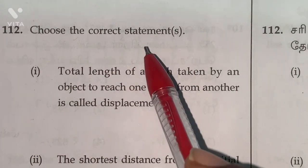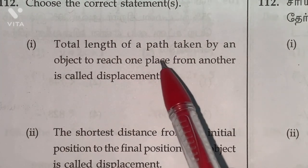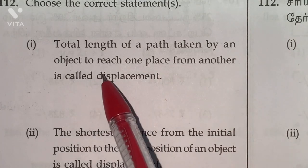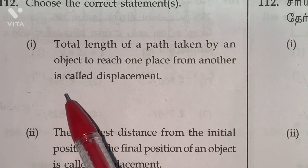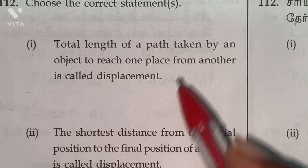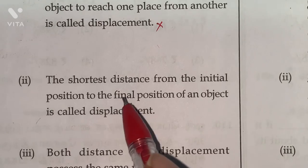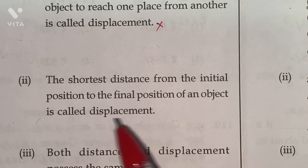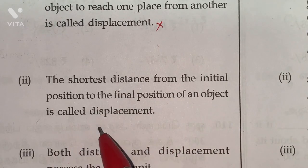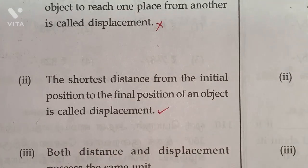112th question. Choose the correct statement. Total length of a path taken by an object to reach one place from another is called displacement. False, they are asking correct statement.